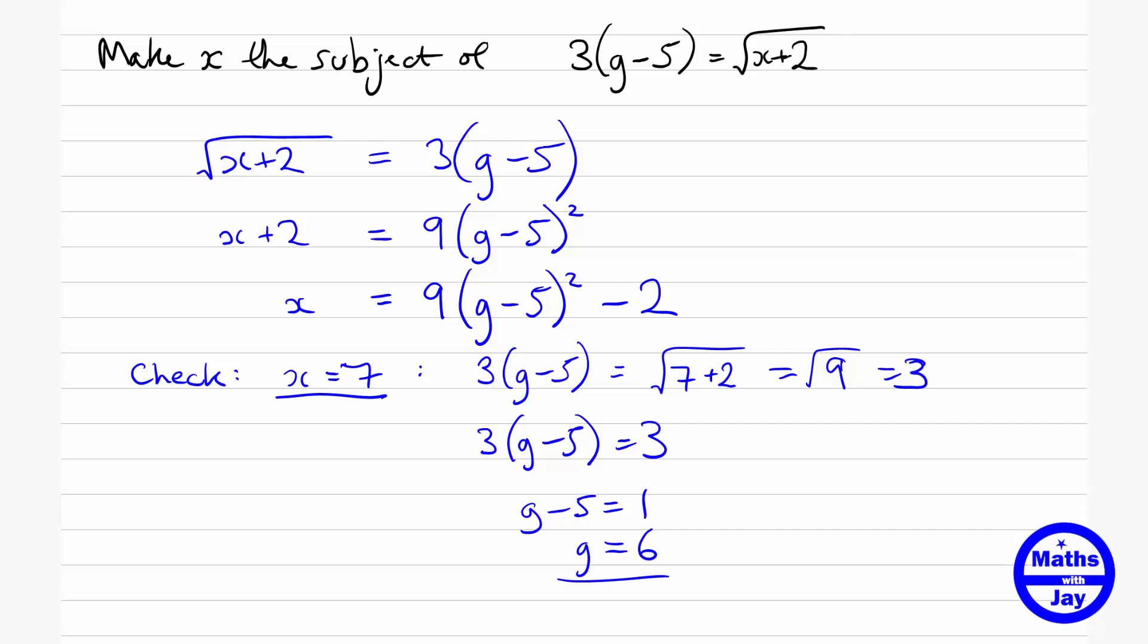What we want to do to check our answer is to make sure that when we substitute in the value of g of 6, that we do end up getting x is 7. If we do, then it means there's a good chance our answer's right. It's not saying it's definitely right, but there's a good chance it is right. At least it will work for this one value. So let's have a look at what happens.